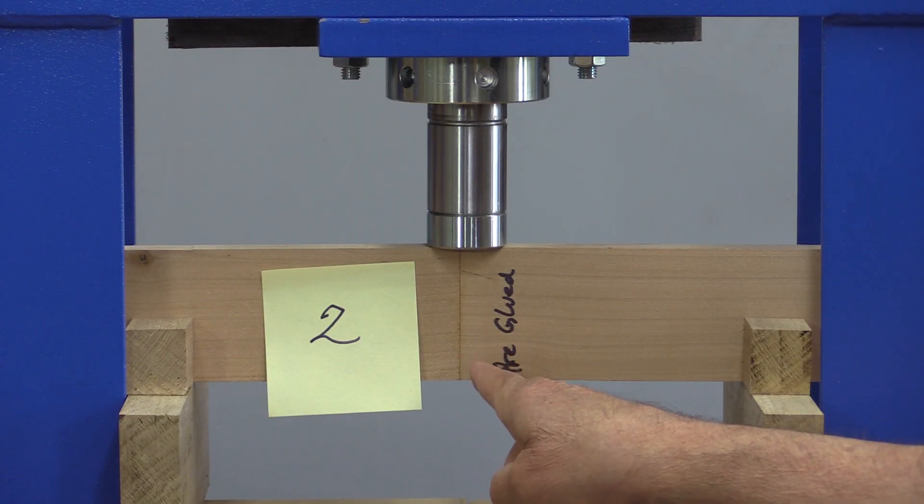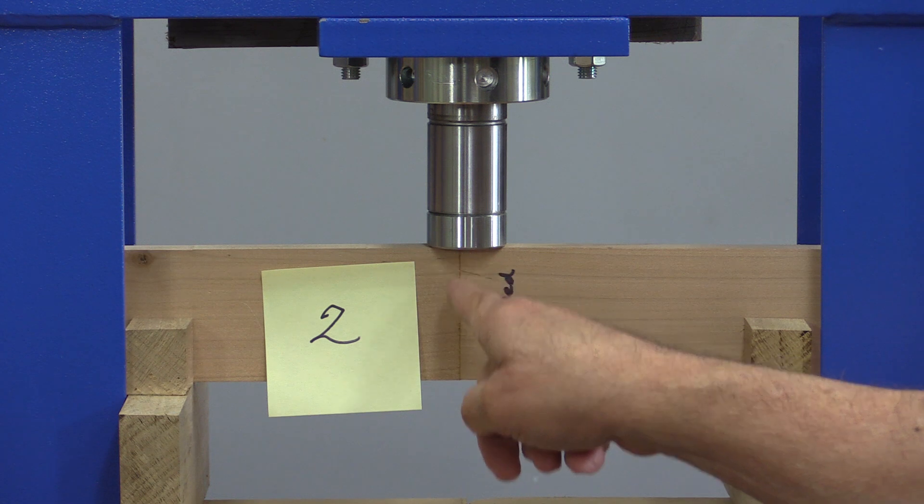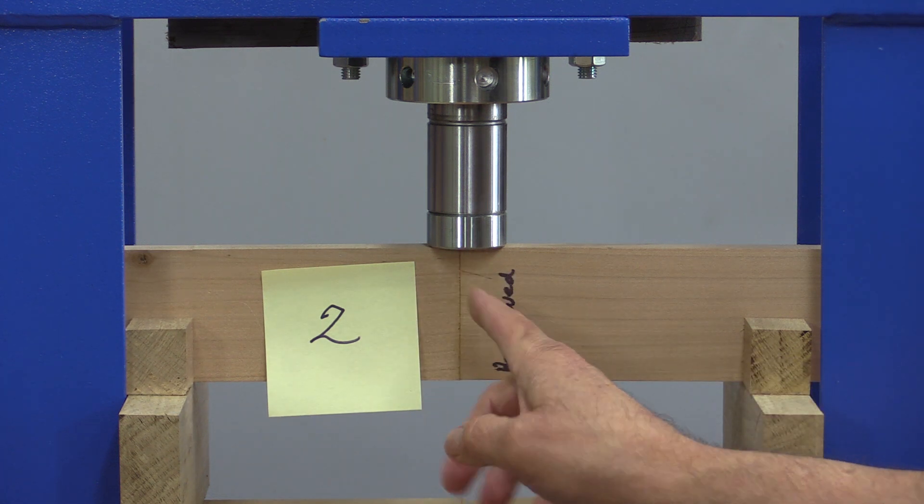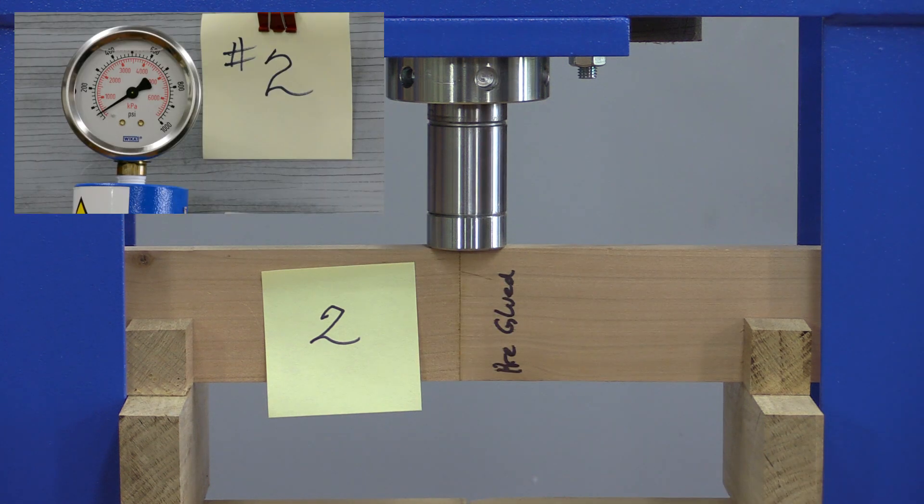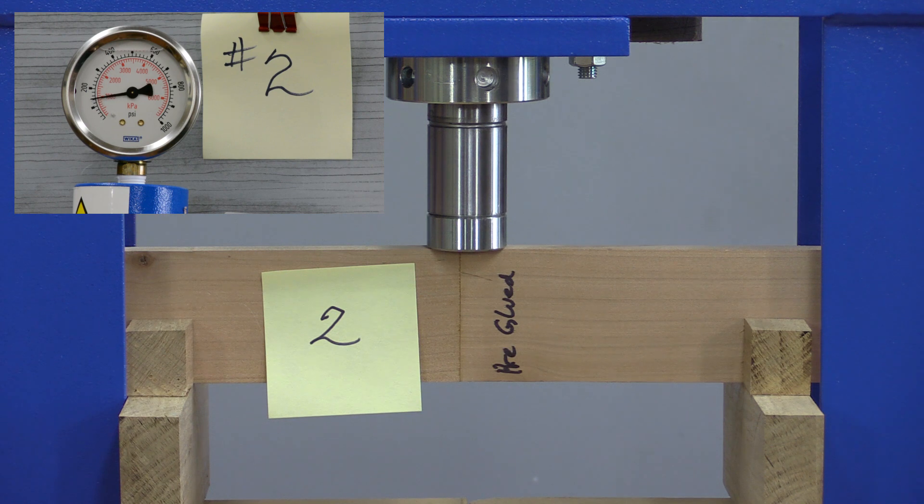Here's the next one, number two, and this is pre-glued. So this was glued on each side, left for 15 minutes, then re-glued and clamped.